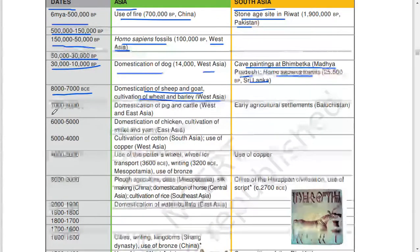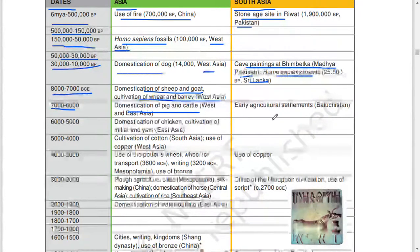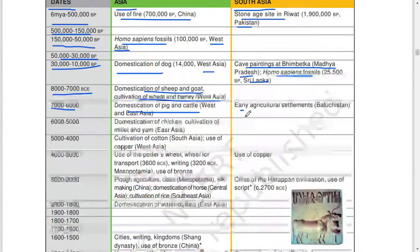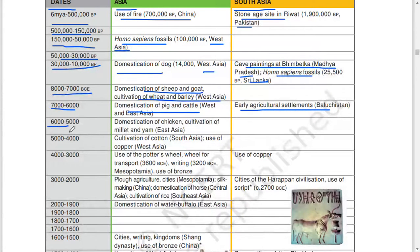7,600 to 6,000 BCE: domestication of pig and cattle, West and East Asia. Early agricultural settlement, Balochistan. 6,500: domestication of chicken. Cultivation of millet and yam, East Asia.